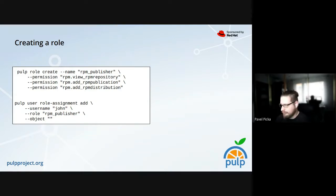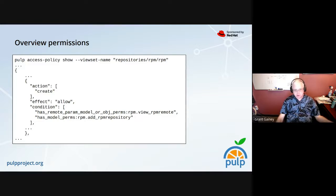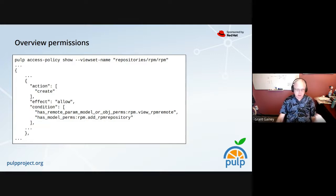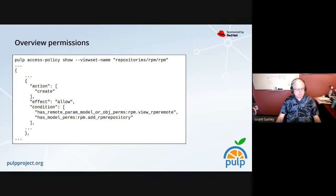To clarify: if I want to be able to create a repository, I need to be given the create repository permission, and because repositories have remotes, I either need model-level access to remotes or access to a specific remote object. I could have model-level access to remotes, but maybe there's just a remote that somebody gave me permissions to view — and that's enough. Yes, exactly — that's what this is saying.